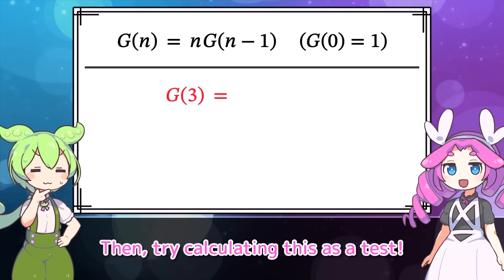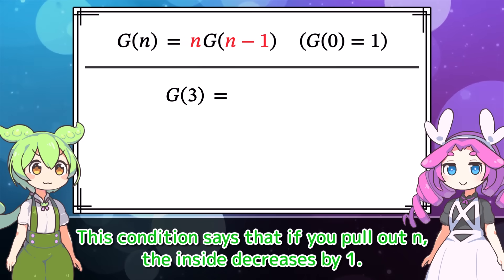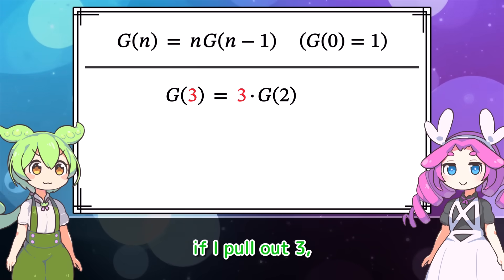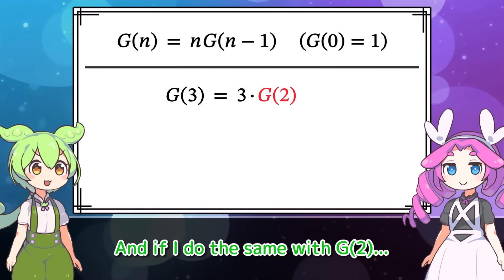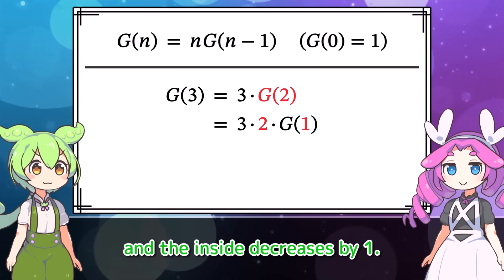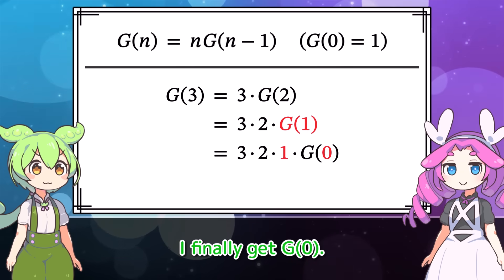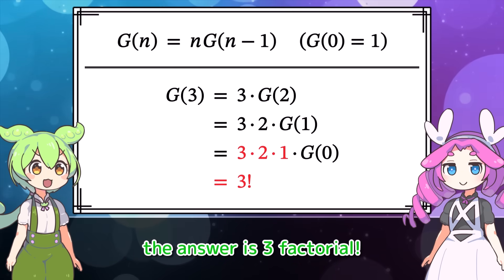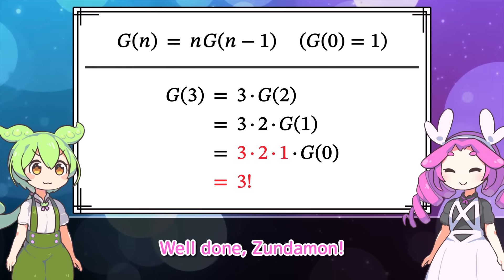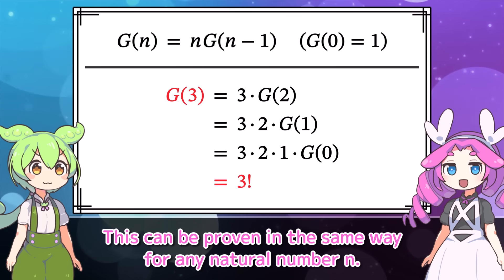Try calculating this as a test. This condition says that if you pull out n, the inside decreases by 1. So if I pull out 3, the inside decreases by 1. And if I do the same with g of 2, 2 comes out in front and the inside decreases by 1. If I do it once more, I finally get g of 0. And since g of 0 equals 1, the answer is 3 factorial. You showed that g of 3 equals 3 factorial. This can be proven in the same way for any natural number n.